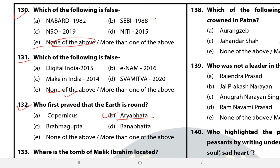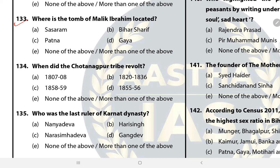Question 133: Where is the tomb of Malik Ibrahim located? The answer is B — Bihar Sharif. Question 134: When did the Chhota Nagpur tribe revolt? The answer is B — 1820 to 1836. Question 135: Who was the last ruler of the Karnat dynasty? The answer is B — Hari Singh.